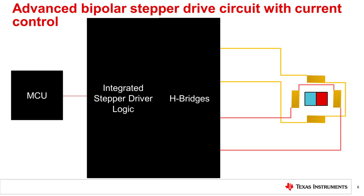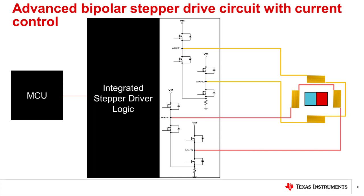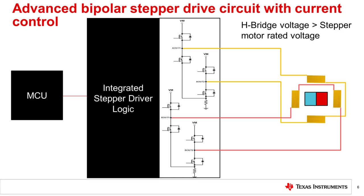Modern stepper motor drivers regulate current to achieve better performance in stepper motors. Current regulation allows the voltage provided to the H-bridges to be much higher than the voltage rating of the stepper motor. For example, a stepper motor with a voltage rating of less than 5 volts can be driven by H-bridges connected to 24 volts when current regulation is used. Due to the current being regulated at a specific level, the voltage created by the current flowing through the winding resistance is within the rated values of the stepper motor. Operating at higher H-bridge voltages also allows the current in the stepper motor windings to reach the specified level in less time, and reaching the specified current level sooner allows the motor to spin faster.